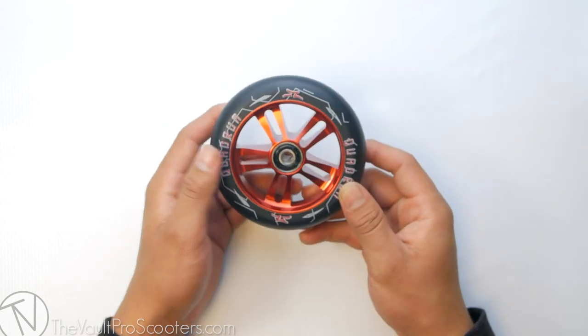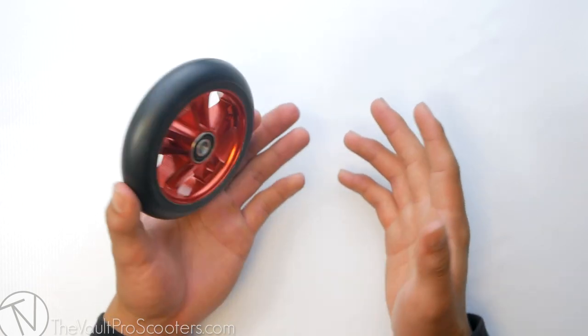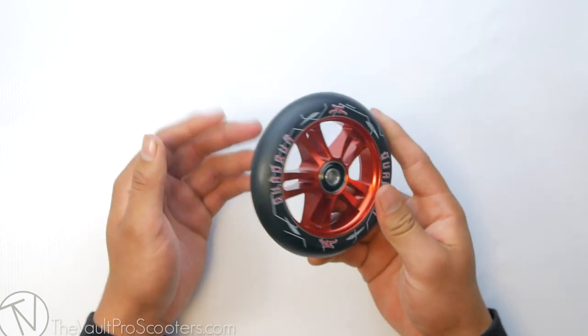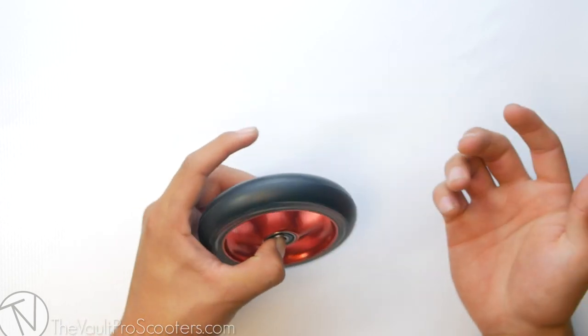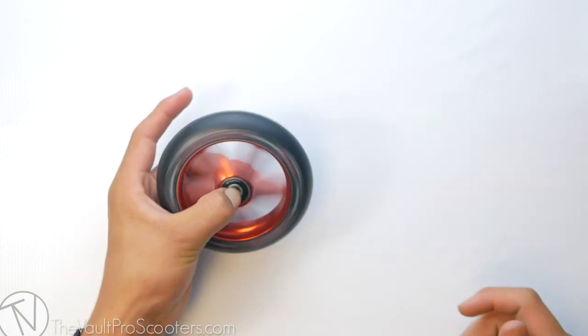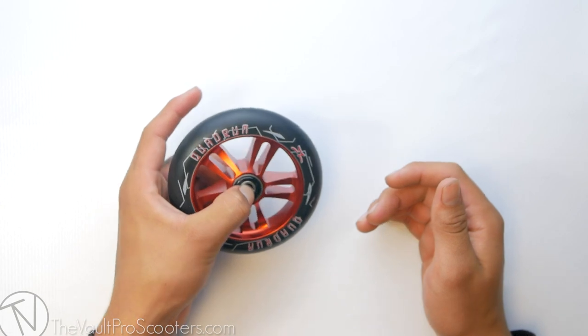The durometer for this wheel is at 88A, so it's honestly more on the harder side, but don't mind that—it's gonna wear down really nice and smooth. It also comes with bearings included, Titan ABEC-7 bearings, so that means you're gonna be rolling really nice and smooth.